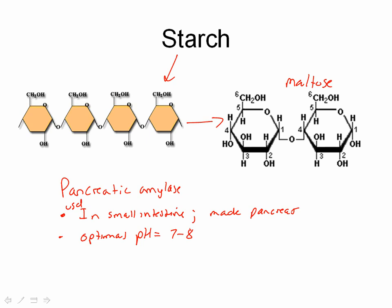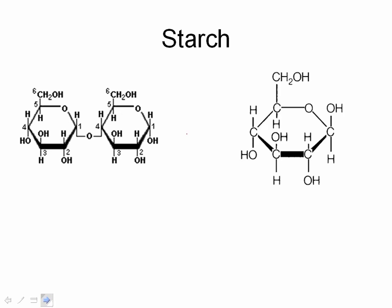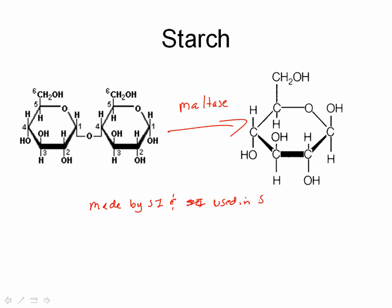Once that's done, we have all of our starches broken down into maltose. Now we need that maltose to be broken down into our glucose monomers, and this will be facilitated by the enzyme maltase. Maltase is made in the small intestine, with an optimal pH of around 7 to 8. The whole reason we need this glucose is it's used in cellular respiration in order to make ATP, which is our energy source.